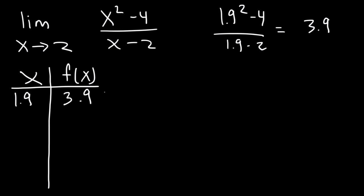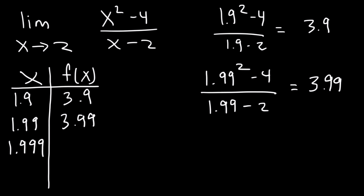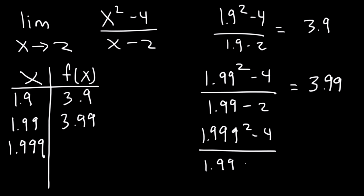Now let's pick a number that's even closer to 2. For example, 1.99. Type this in your calculator too and see what answer you get. This will give you 3.99. Now let's try 1.999. Do you see a pattern? What number is the limit converging to? This is equal to 3.999.